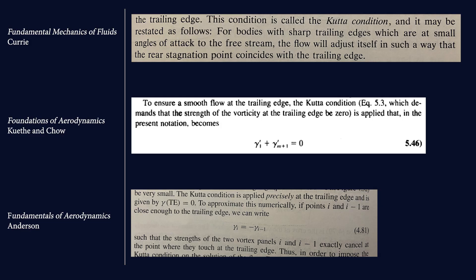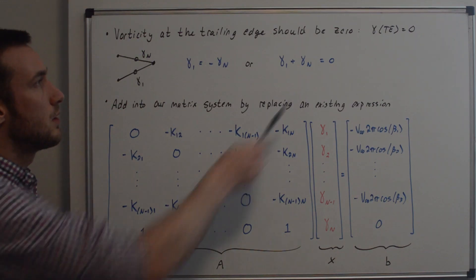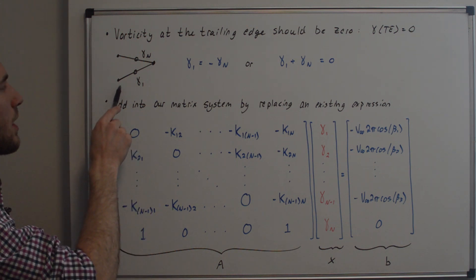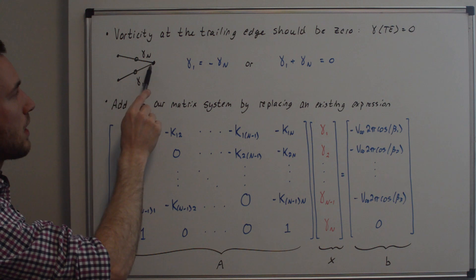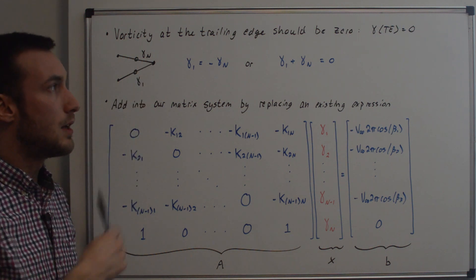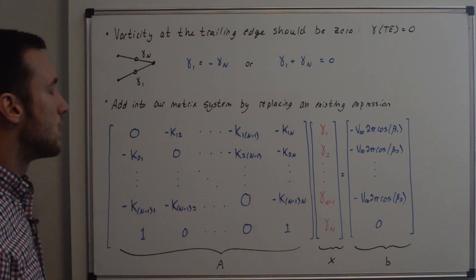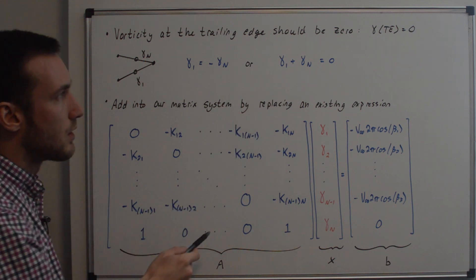I'll be using the simplest method in this implementation, but a different implementation in my combined source and vortex panel method videos. From the sources shown, we're trying to get the flow to adjust itself so that the rear stagnation point coincides with the trailing edge. We apply this by requiring that the vorticity at the trailing edge be zero — that is, gamma at the trailing edge equals zero.